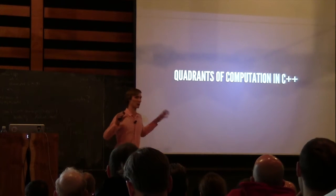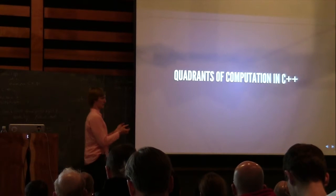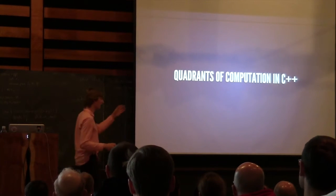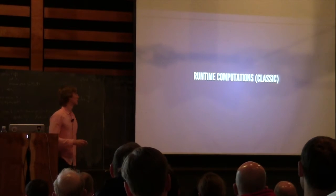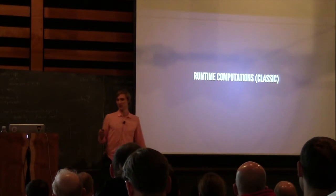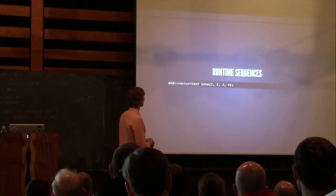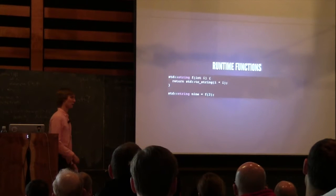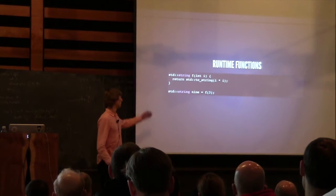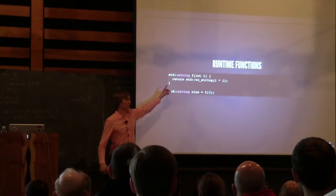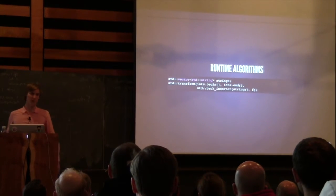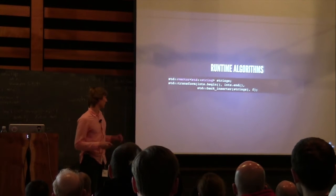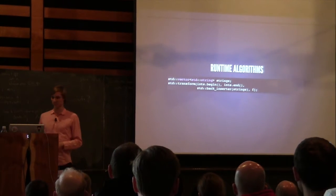First, I'd like to locate the paradigm shift amongst the different ways of doing computations in C++, because there are many ways. First, we have runtime computations — classic computations. In this quadrant, we have runtime sequences like std::vector. These are homogeneous sequences; a vector only contains objects of the same type. Then we have runtime functions — normal functions — also homogeneous, because their return type and argument types are fixed. When we mix those together, we can get runtime algorithms, which take structures and runtime functions and transform them.